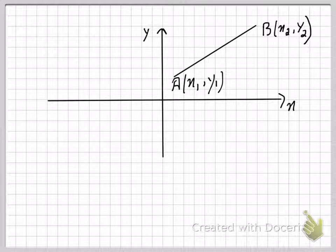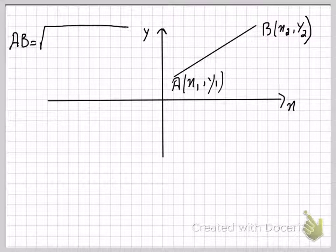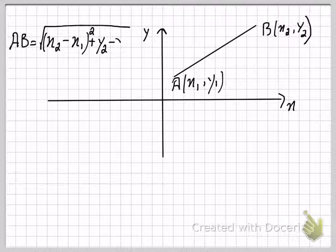In this video I will teach you how to calculate the distance between any two points. There's a very simple formula for that: AB equals the square root of (x2 minus x1) squared plus (y2 minus y1) squared.